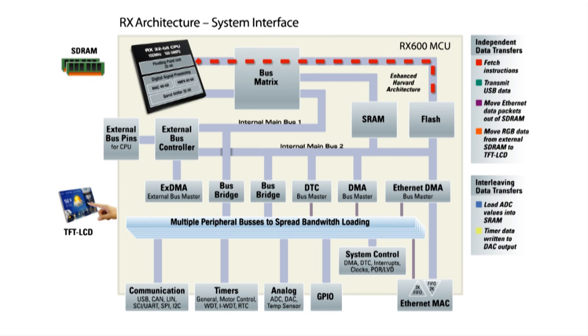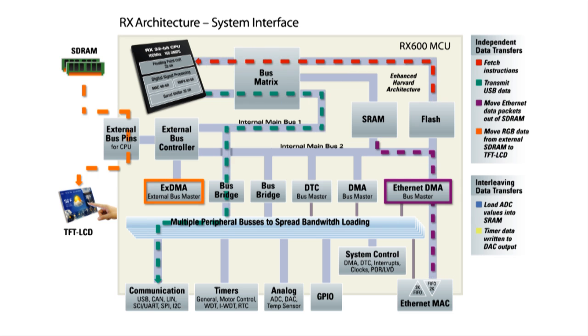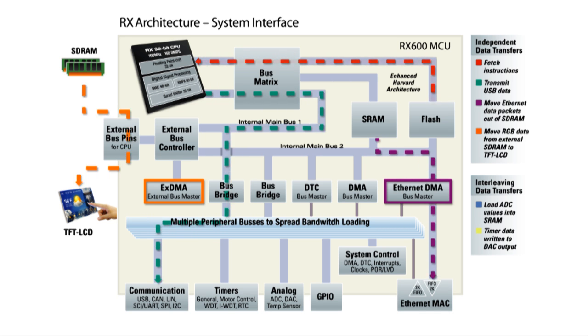Let's take a look at an example of how the RX 600's holistic system interfaces can be used to address high-throughput application needs. The CPU can fetch instructions from flash memory while at the same time writing to the USB interface to transmit USB data. And at the same time, the Ethernet DMA controller is moving data packets out on the Ethernet bus from SRAM. Also at the same time, the external DMA controller is moving RGB data from an external SRAM to a color TFT LCD panel. Notice that all four of these transfers are happening simultaneously, each on separate physical buses with no interference to each other.